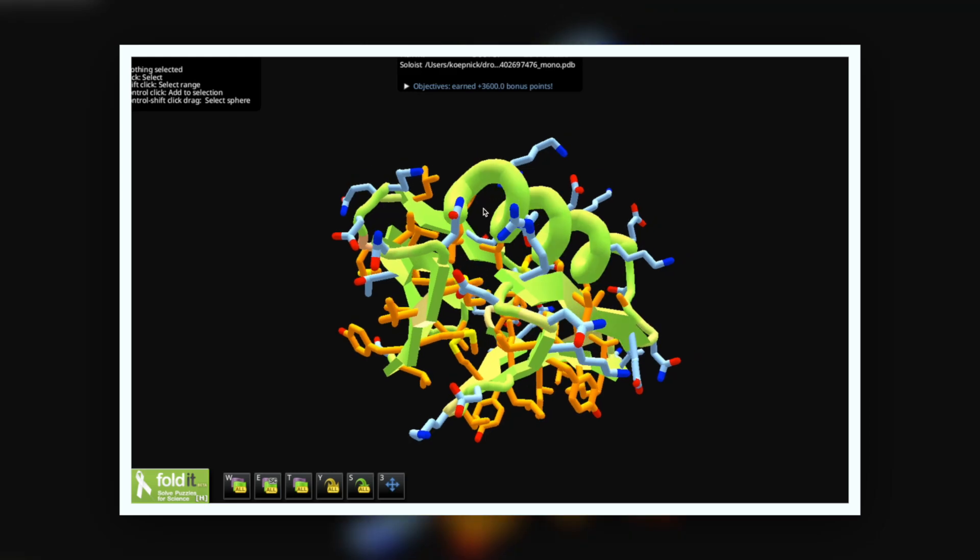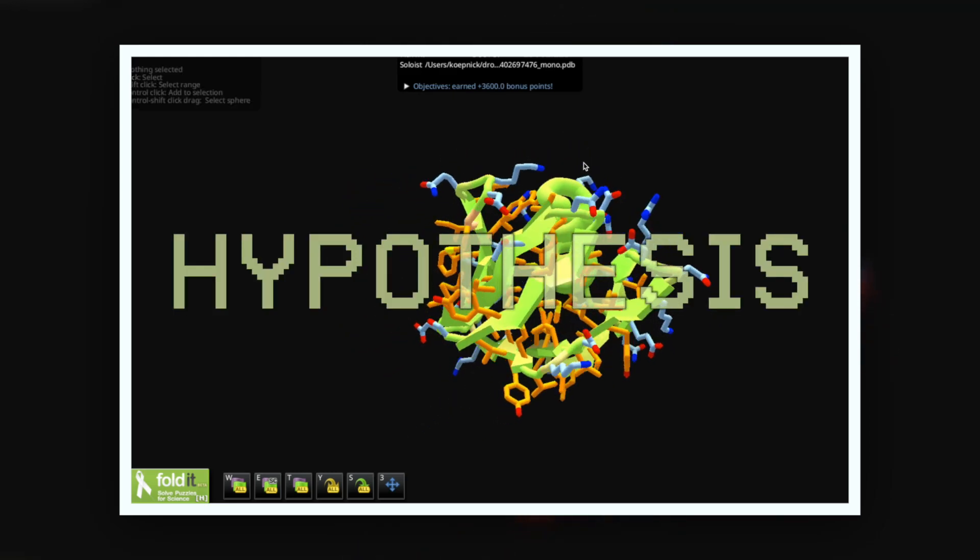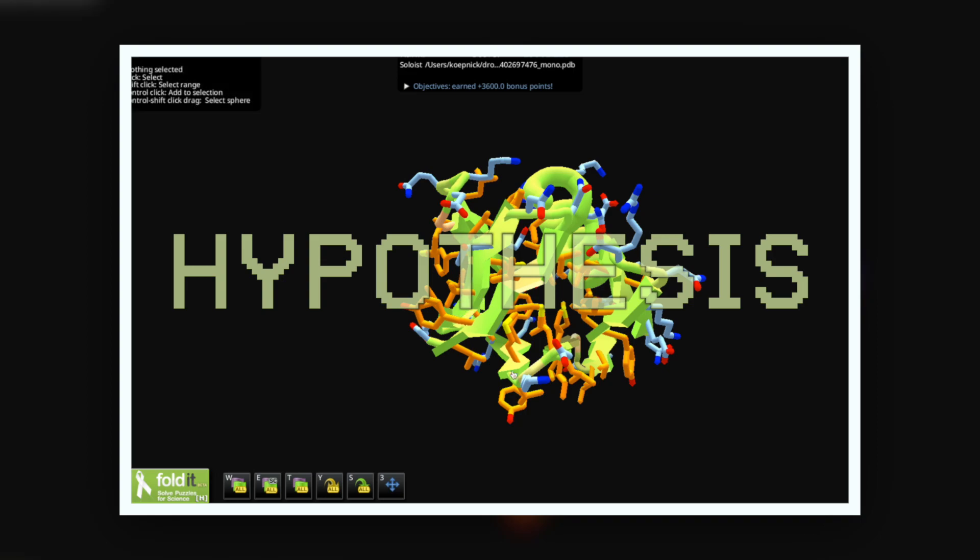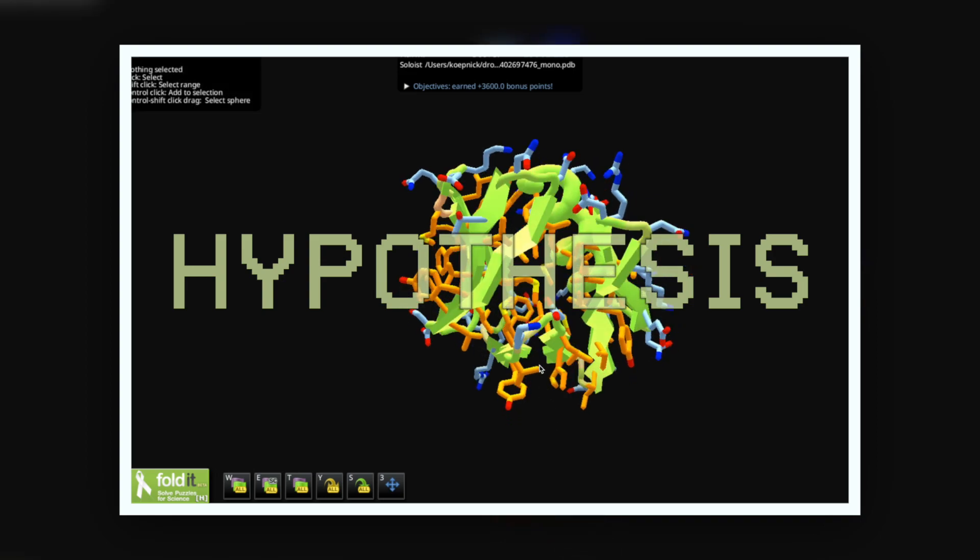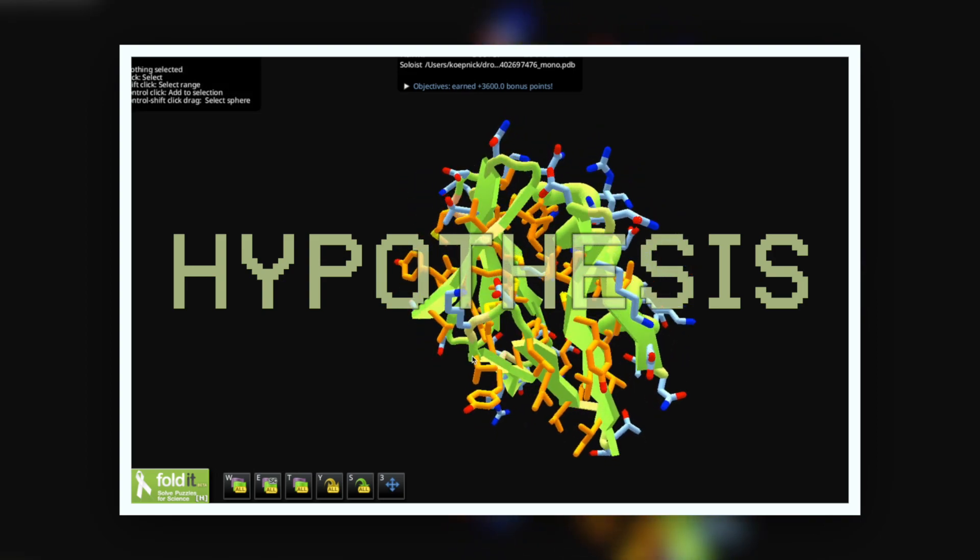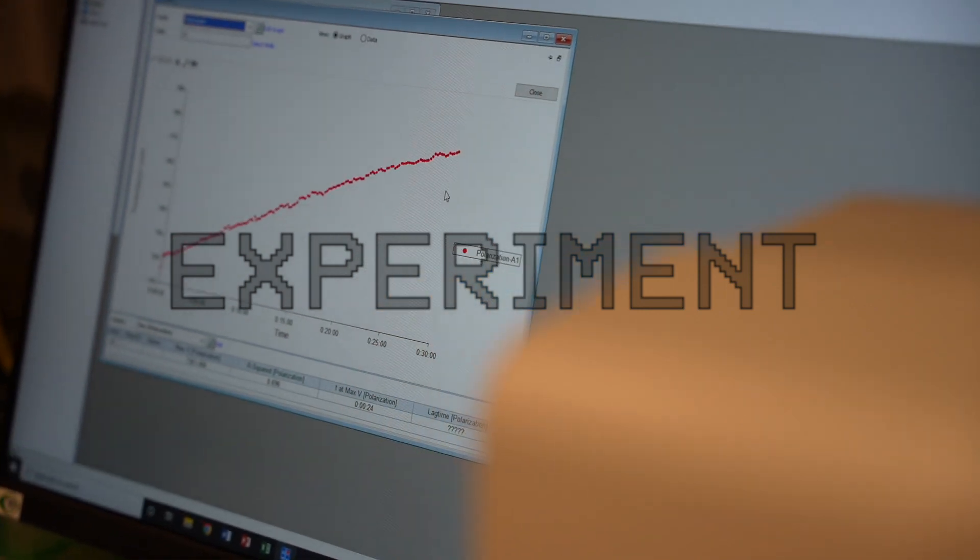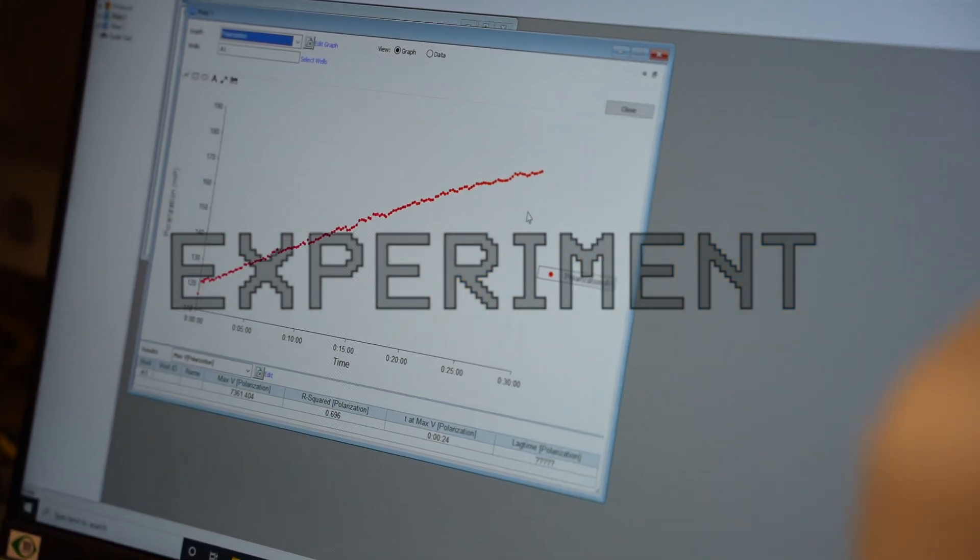We started this journey with a Foldit player solution, a digital hypothesis about how this protein design will fold. Now with this pure protein sample, we can measure in the lab whether the protein folds up like we predicted it would. In the next video in this series, we'll show you more about how we study these Foldit proteins. And that brings us to this month's design of the month.